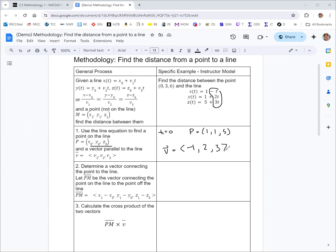Moving to step 2, we want to determine a vector connecting the point to the line. So M is a point not on the line, and P is the point on the line. The vector from P to M connects the point on the line to the point off the line.